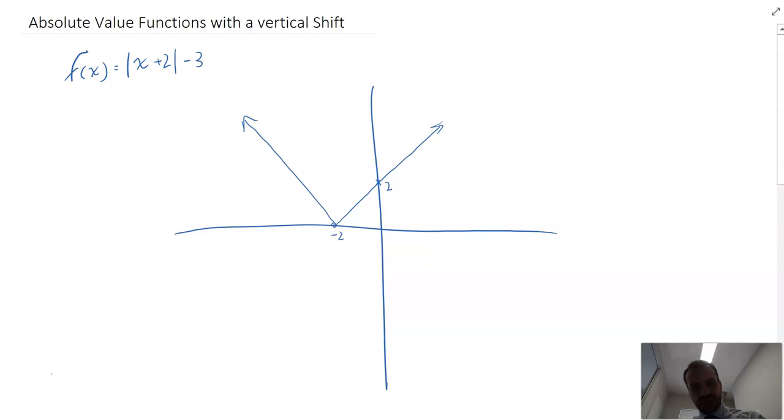So now we can say not 2, but negative 1 here. We can say that this point, which was originally negative 2, 0, will now be negative 2, negative 3, somewhere about there. And I can draw my new function in like this. And that is an absolute value function below the x-axis.